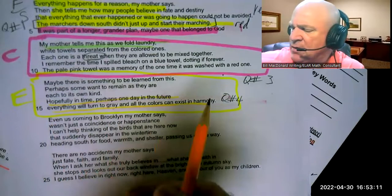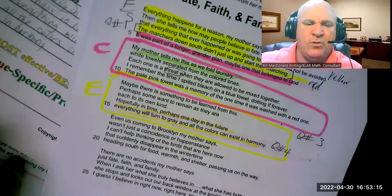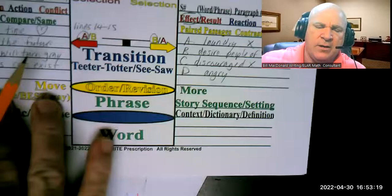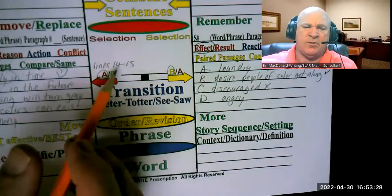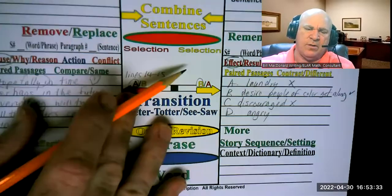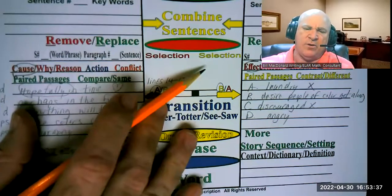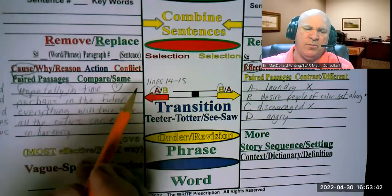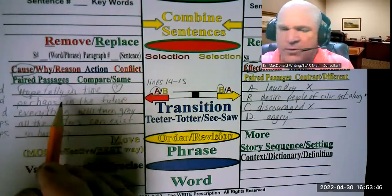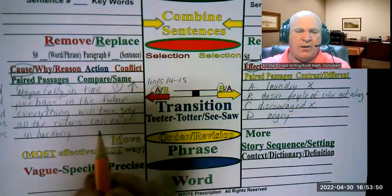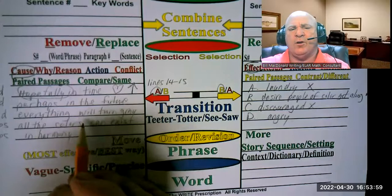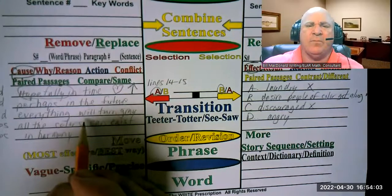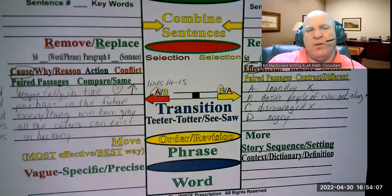I'm going to take you to my graphic organizer so you can see there's my teeter and my totter - how does A relate to B? And if you're going to start preparing for next year's two-part answers, you've got to know both parts. They're giving us the first part: lines 14 and 15 is the A, the cause. So hopefully in time - emotion, positive - I will draw an up arrow. Perhaps in the future, everything will turn gray and all the colors can exist in harmony. She goes beyond talking about laundry to talking about every race, every color, every creed, being able to say we have differences, but we have enough similarities where we can put our petty grievances and disappointments aside.